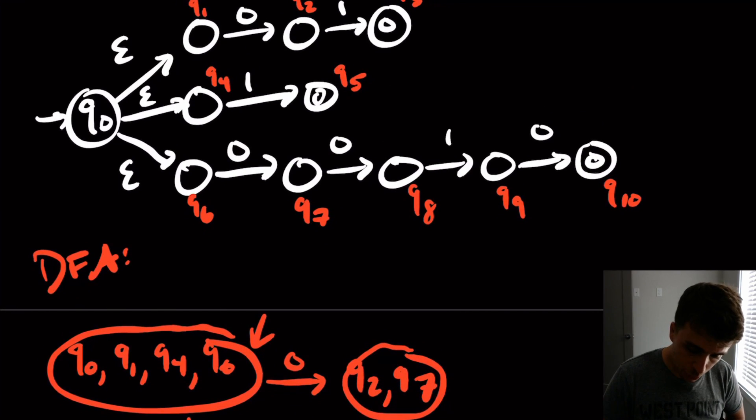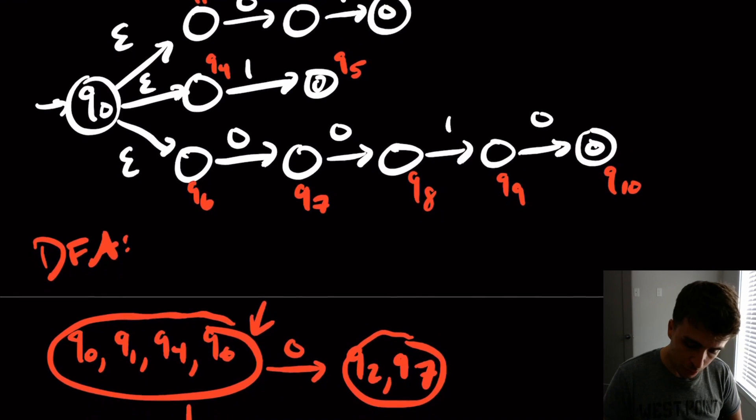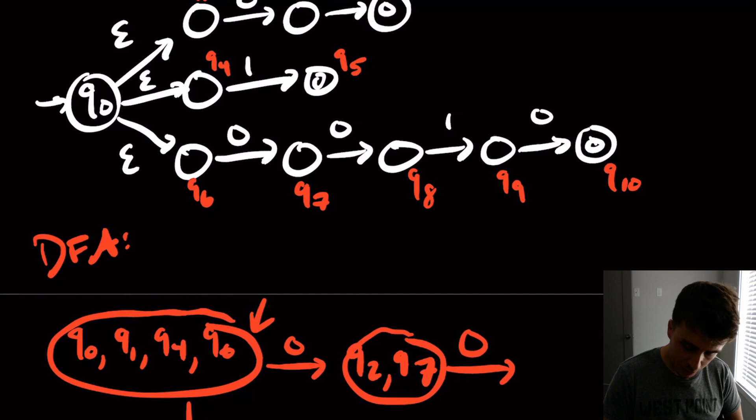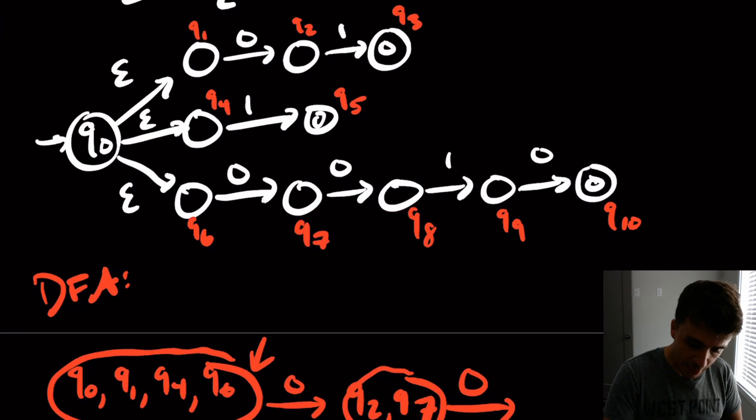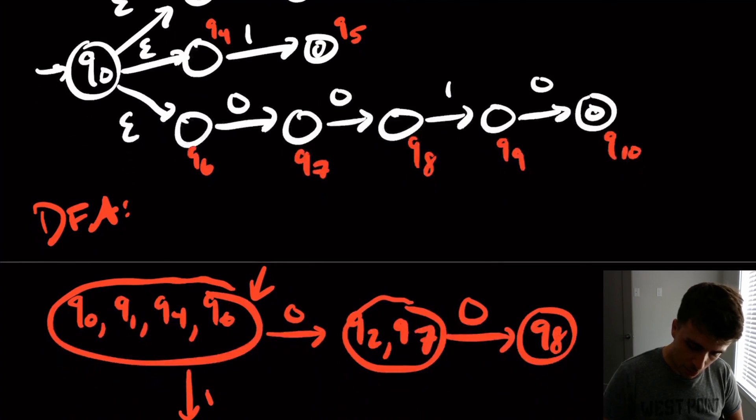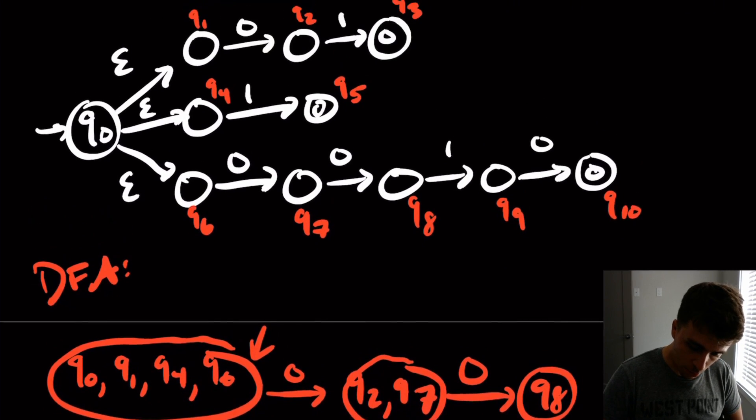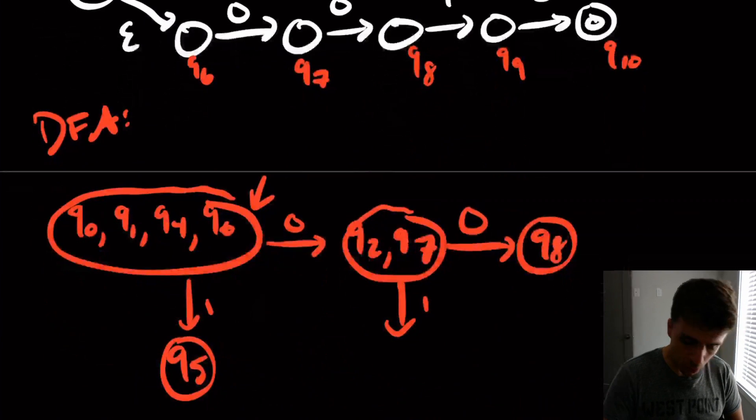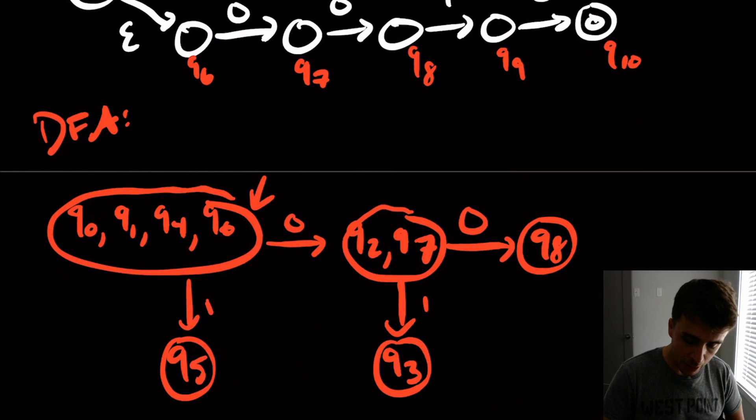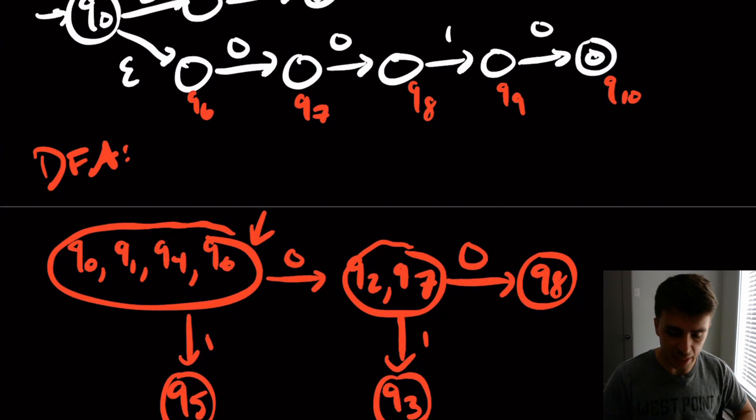And then, so let's see from q2, q7, where can we go on 0? Well, the only state we can go to is q8 here. And then on input 1, where can we go on q2 and q7? We can only go to q3. So now it's going to devolve into single states, which is nice.